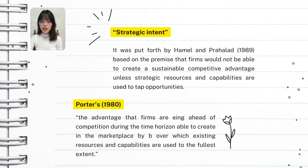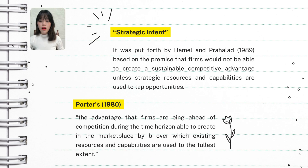Porter's 1980 idea highlights that a company's competitive advantage comes from using its resources and capabilities better than its rivals. When a business achieves hyper-competitive positioning, it means they are maximizing their strengths — like their technology, expertise, or customer service — more effectively than others in the market. Competitive advantage means being better than your competitors in a way that customers value. It could be offering better products, lower prices, or superior service. Companies that fully maximize their strengths will be able to maintain an advantage over their competitors for a long time. The key is to keep pushing those resources and capabilities to their limit to stay in front.